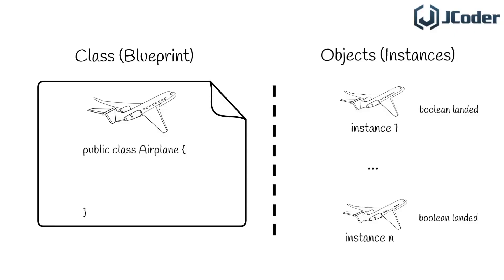So we saw an example of static versus non-static variables. But what about methods? How can methods belong to an instance or to a class? The main way to think about this difference is about the variables that a method has access to — or in other terms, what is called the scope of the method. Let's take a look at our land method. As it is non-static, it means that each airplane object that we create will have its own version of the method. The code of all these methods is exactly the same; however, the data that each method sees is different.